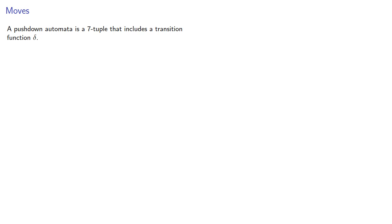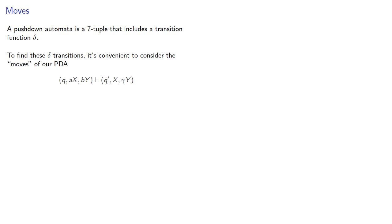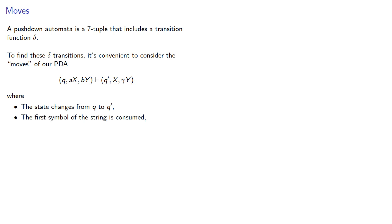Remember, a pushdown automata is a 7-tuple that includes a transition function delta. To find these delta transitions, it's convenient to consider the moves of our pushdown automaton: q a x b y derives q' x gamma y, where the state changes from q to q', the first symbol of the string is consumed, and the top symbol of the stack is changed.